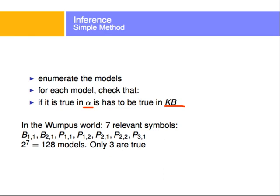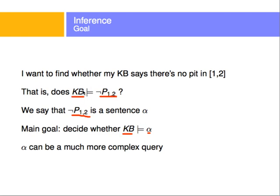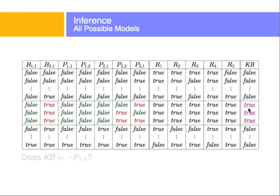Generating the full truth table, only three of those models satisfy all the rules — meaning only three assignments make the knowledge base true. For each of those three cases, we check whether not P12 is also true. In each case, P12 is false, so not P12 is true.